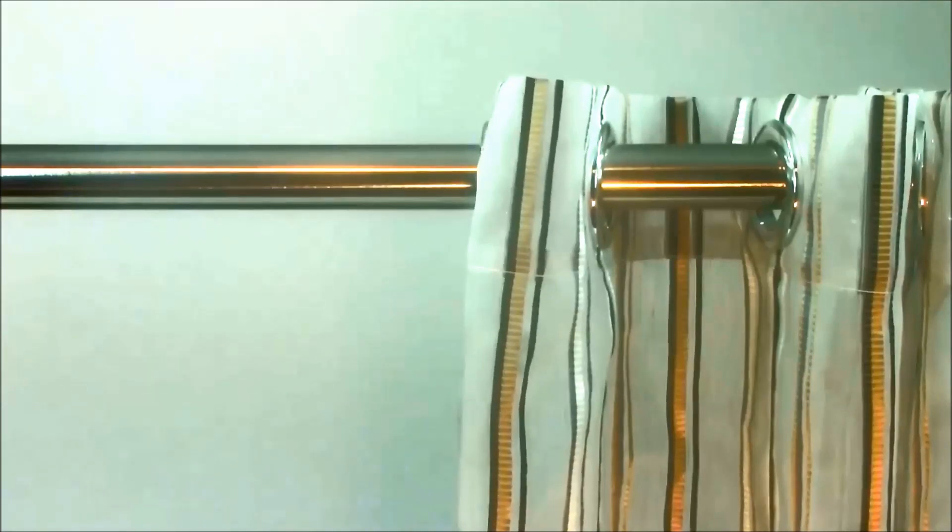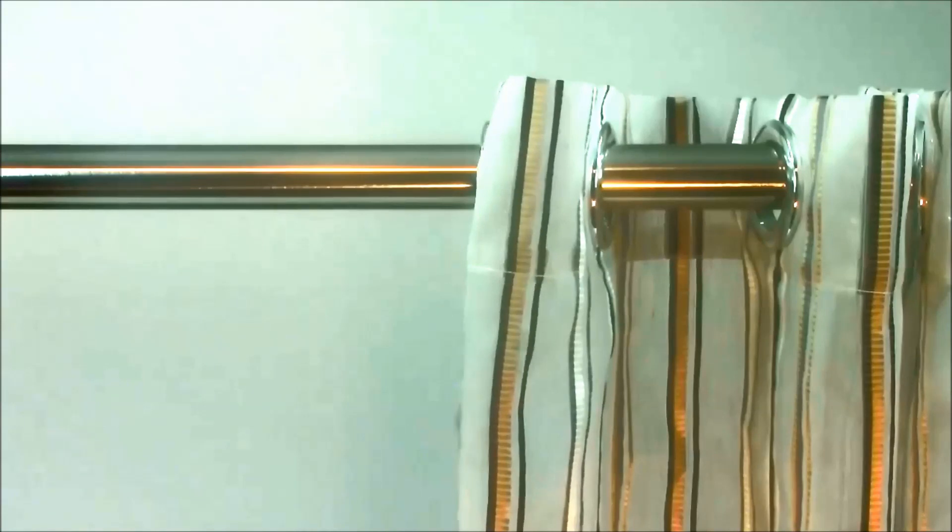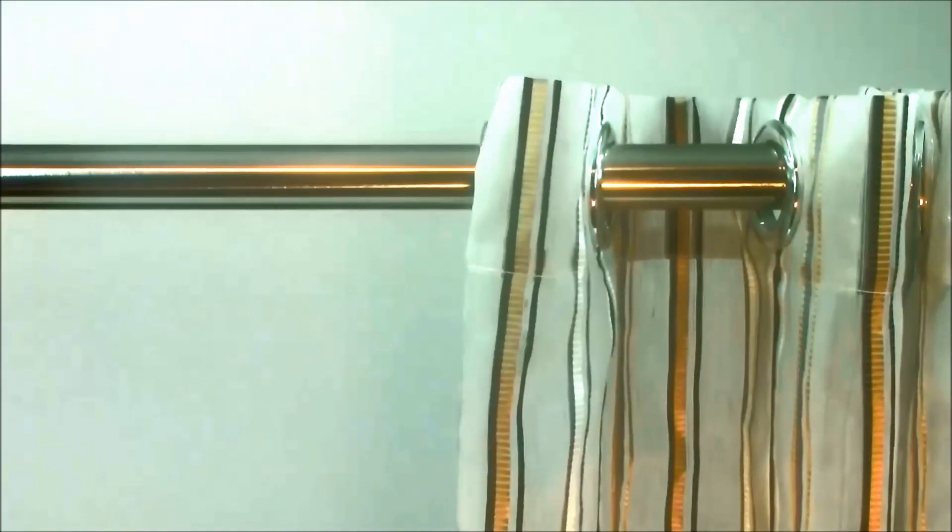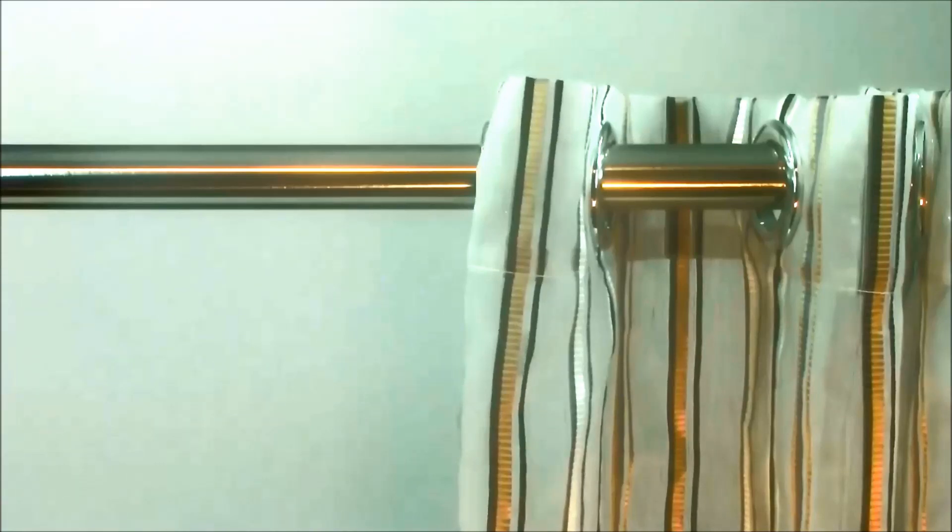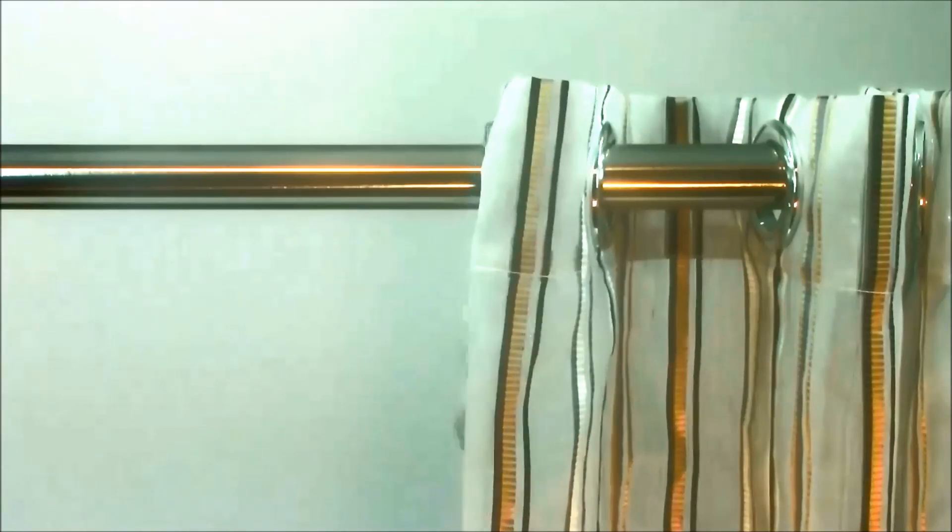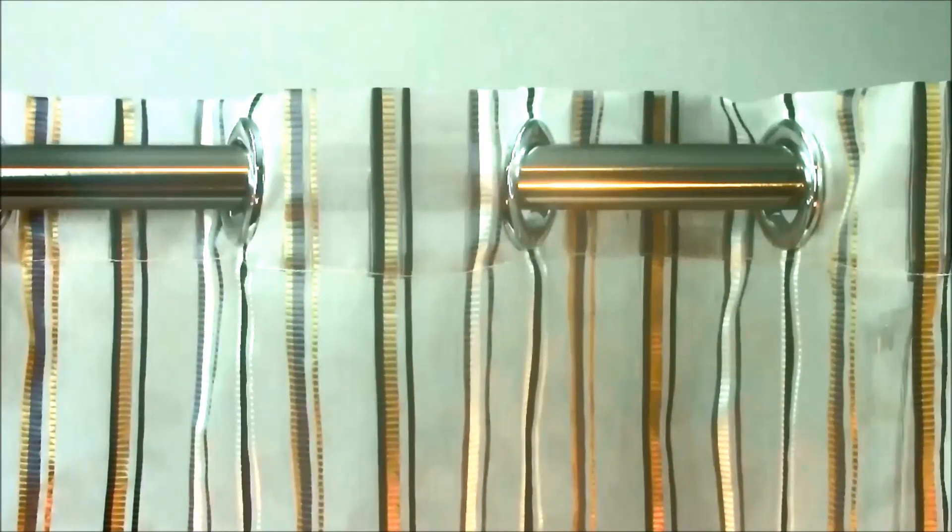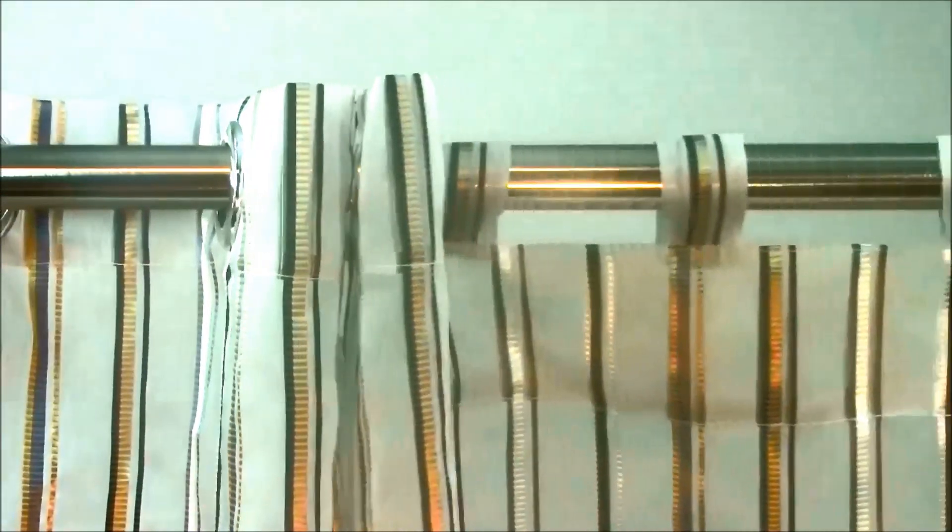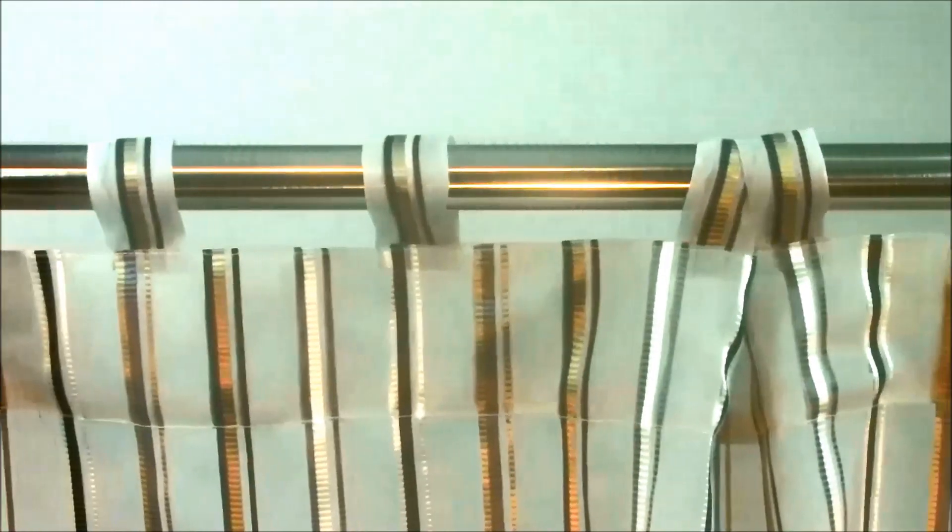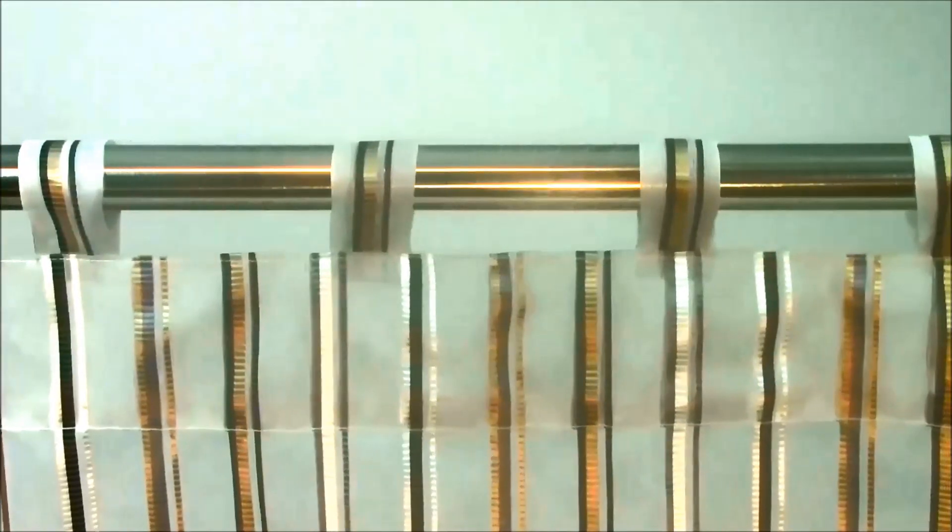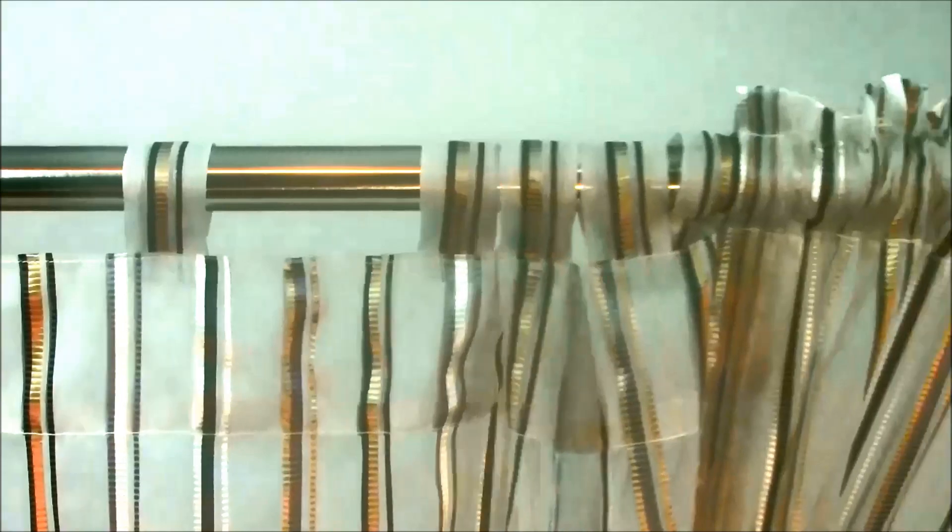The pole, shown here in satin silver, has been designed for all types of curtains that do not require curtain rings as they fit directly onto the pole. The most popular styles of this type of curtains are eyelet curtains, tab top curtains, and slot headed curtains.